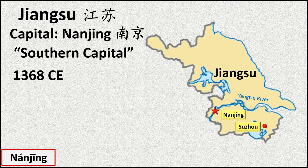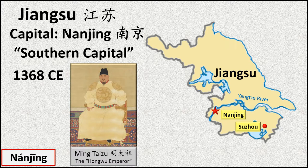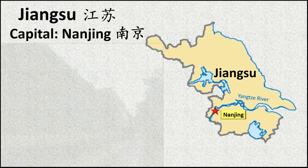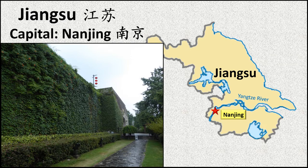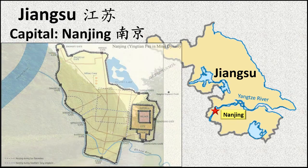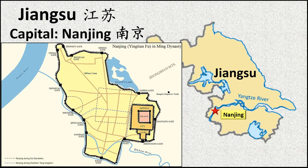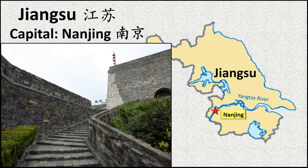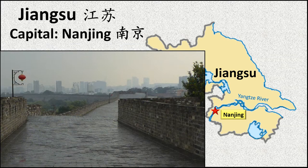In 1368 of the Common Era, after designating Nanjing as his capital, the first emperor of the Ming dynasty, Ming Taizu, decided it needed an improved defensive wall. For many centuries, Chinese cities had included a rectangular walled section, but Nanjing's new wall was destined to throw away that model and leverage the topography of the city. Workers spent 20 years building what was to become one of the longest city walls in China, encompassing more than 20 square miles.